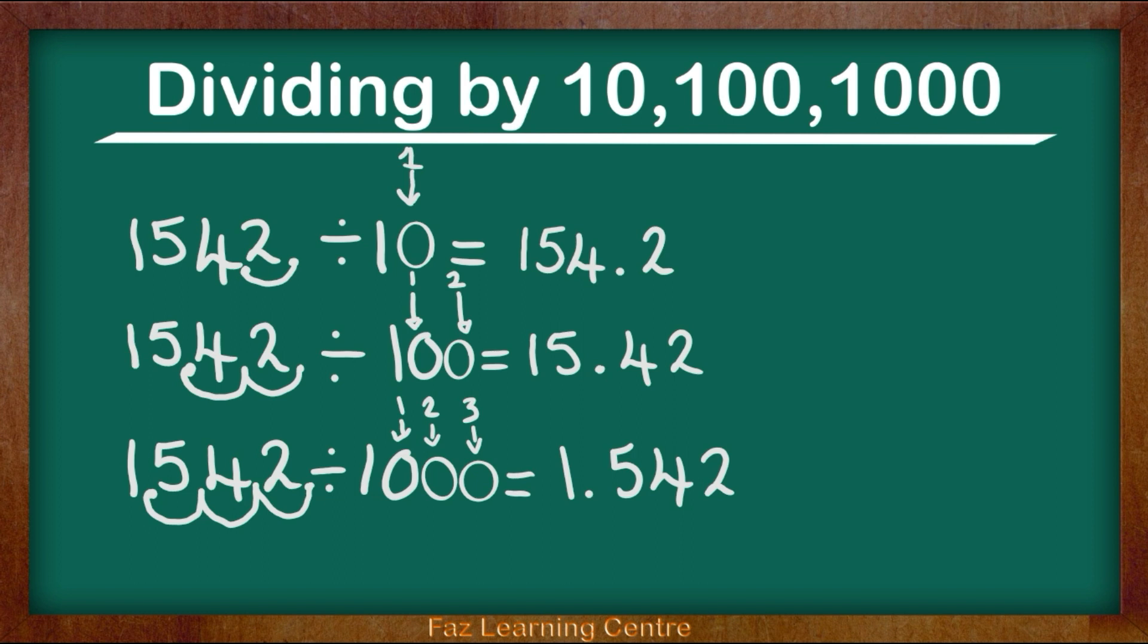The top tip that I would like to give you is look at the zeros. Depending on the zeros, that is how many times you are going to be moving to your left. Remember, we move to the left to make the number smaller. We know when we are dividing, when we are sharing something, we make the number smaller. The number becomes smaller. Our answer becomes smaller. And as you can see, 1542 is larger than the answer. The answer is smaller just like I said.